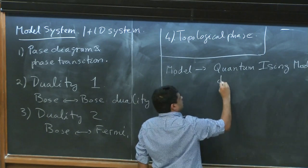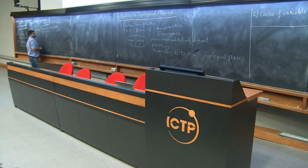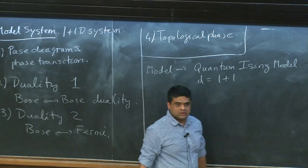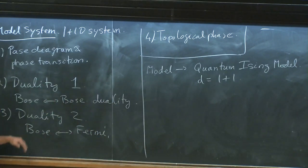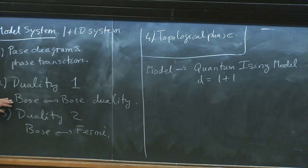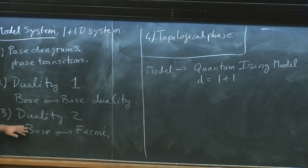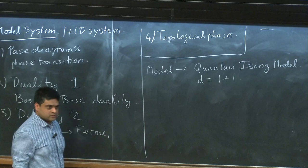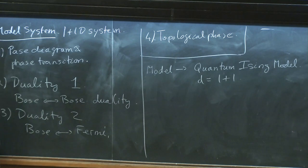We'll work in one-plus-one dimensions. There's a mapping of this model to a statistical mechanics model in two dimensions where it will just be the classical Ising model. This duality over here will be the Kramers-Wannier duality; this one over here will be the exact solution to the Ising model. The reason people could solve it exactly was because there's a set of fields in terms of which this is just a free problem — and that's the only problem we can really solve.